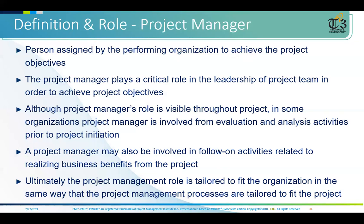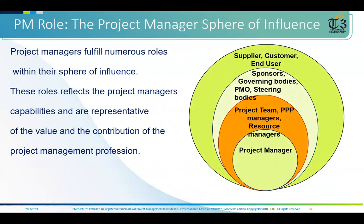Who are the stakeholders? Anyone who is being impacted or will be impacted by the project. The project manager will be handling the project team, public-private partnership managers, resource managers, sponsor, governing bodies, PMOs, setting bodies, suppliers, customers, and end users. Based on stakeholder engagement and communication, we develop a communication management plan — also called the sphere of influence or onion diagram — to define communication channels.